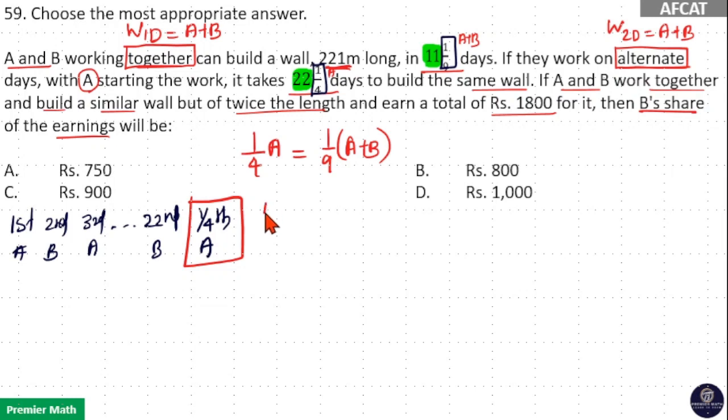Then (A plus B) divided by A equals 9/4. Now you can see A's efficiency is 4 units. A plus B efficiency is 9 units. That means if A is 4, B is 5.